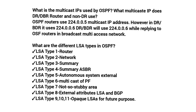OSPF routers use 224.0.0.5 multicast IP address. However, the DR and BDR use 224.0.0.6 when replying to OSPF routers in a broadcast multi-access network. LSA types include: Type 1 Router LSA, Type 2 Network LSA, Type 3 Summary LSA, Type 4 Summary ASBR LSA, Type 5 Autonomous System External LSA, Type 6 Multicast OSPF LSA, Type 7 Not-So-Stubby Area LSA, Type 8 External Attributes LSA for BGP, and Types 9, 10, 11 Opaque LSAs reserved for future use.